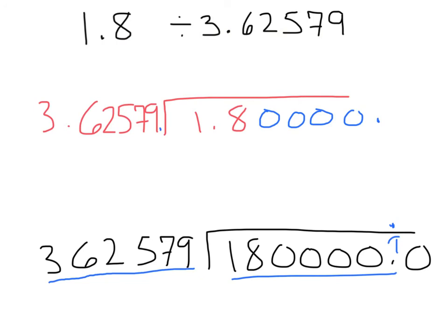Just remember, you want to write the outside number as a whole number. Move the inside decimal the same number of spaces, then divide like you normally would.